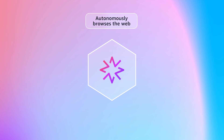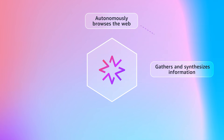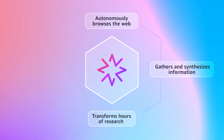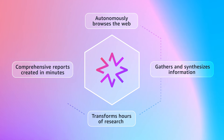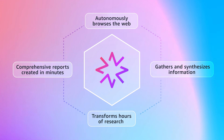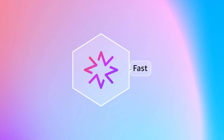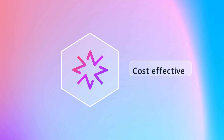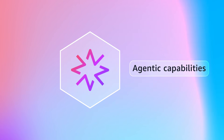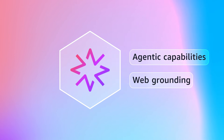Let's look at how Nova 2 Lite works as your research partner. It autonomously browses the web, gathers and synthesizes information from multiple sources, and transforms hours of research into comprehensive reports within minutes. It's a fast, cost-effective reasoning model with agentic capabilities and built-in web grounding.